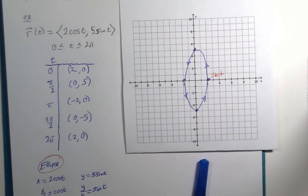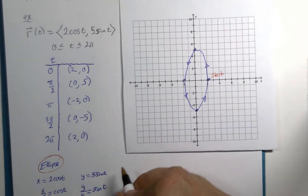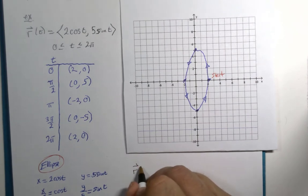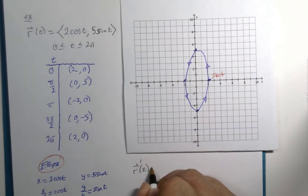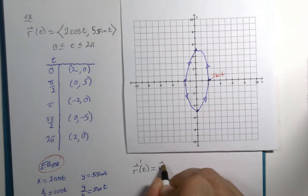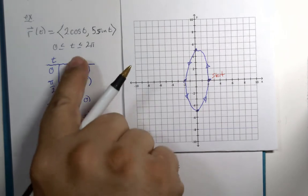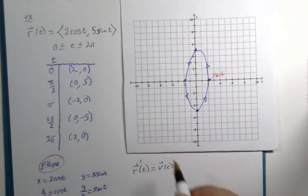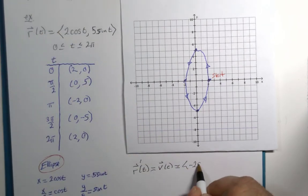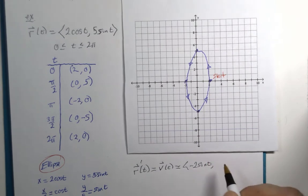Now, what did we just learn about? Oh, yes. First derivative, otherwise known as the velocity vector. Well, let's see, negative 2 sine of t, and derivative of sine is cosine, so 5 cosine.